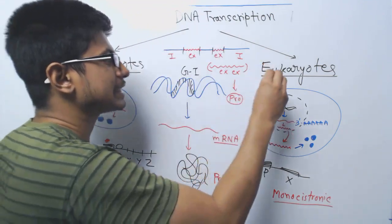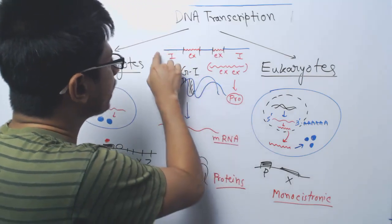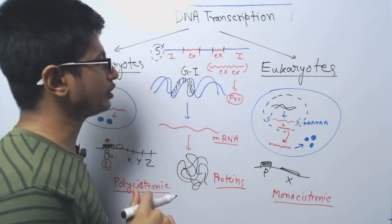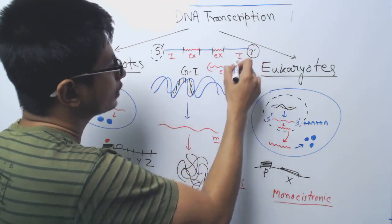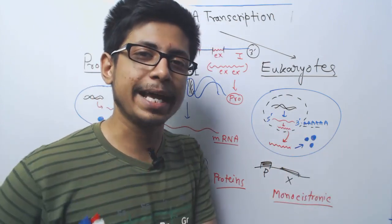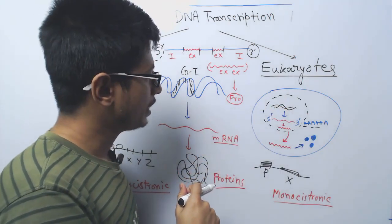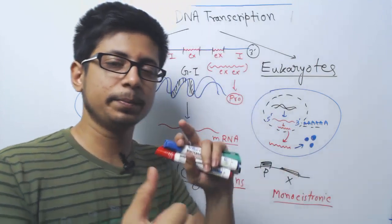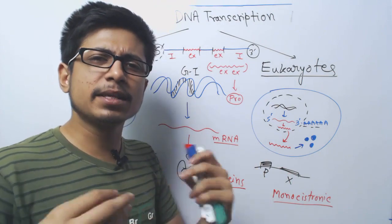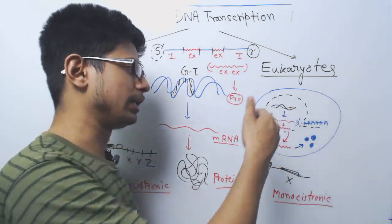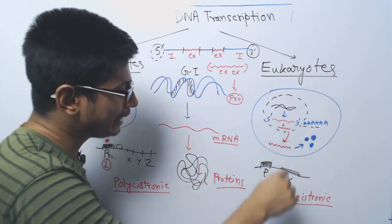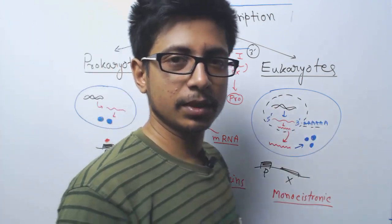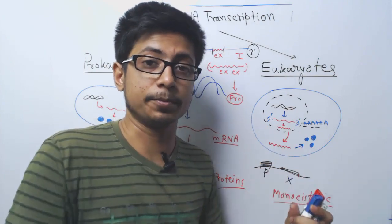There are also several modifications at the five prime end. At the five prime position of the mRNA there is a capping known as five prime capping — addition of a guanosine residue. At the three prime location there is repeated addition of adenine residues called three prime polyadenylation. These are unique to eukaryotes. All of this takes place inside the nucleus. Sometimes RNA editing also takes place inside the nucleus. Once the mRNA is fully matured — with three prime polyadenylation, five prime capping, and splicing — it is exported to the cytosol for protein synthesis.